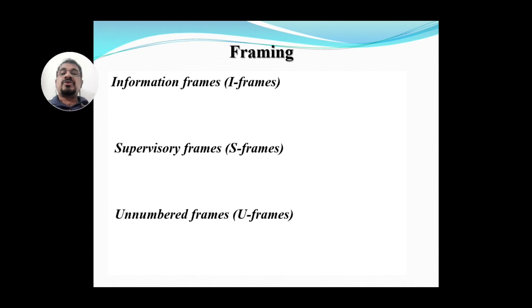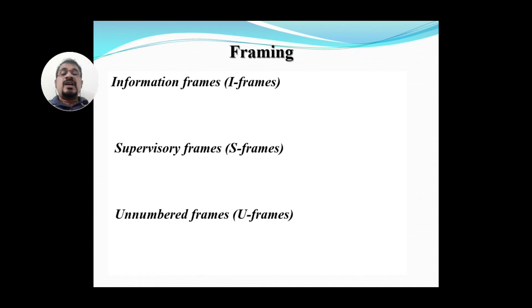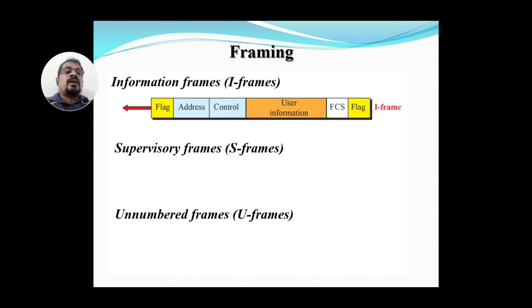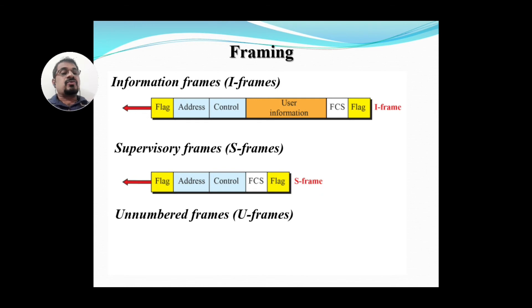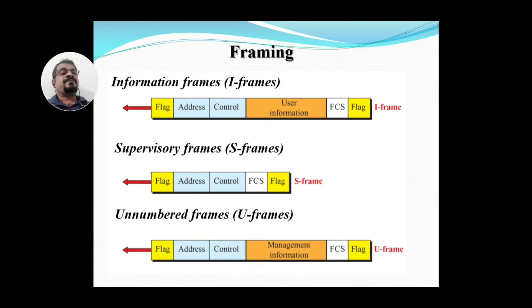There are three different types of frames used in the HDLC protocol: I-frame, S-frame, and U-frame. I stands for Information frames, S stands for Supervisory frames, and U stands for Unnumbered frames. Information frames are used to send original data. Supervisory frames are used for supervising and handshaking kinds of data exchanges. Unnumbered frames are used for management information.